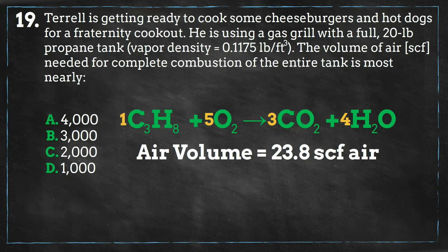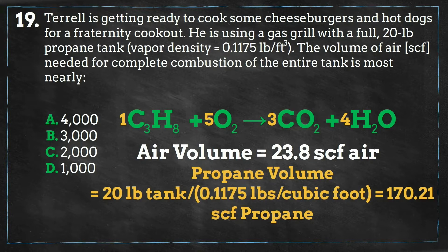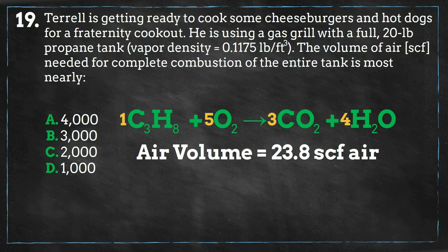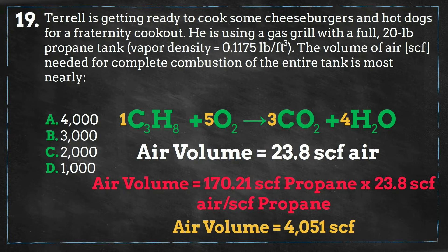With a 20-pound propane tank and a vapor density of 0.1175 pounds per cubic foot, the volume of propane once it hits the air is equal to 170 cubic feet of propane. Multiplying this by the volume of air needed per cubic foot of propane, we get a little over 4,000 standard cubic feet of air needed to fully combust the tank, which is closest to answer A.